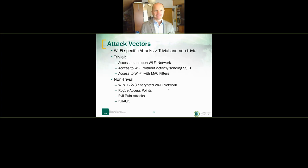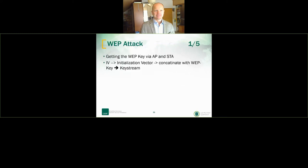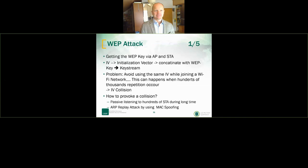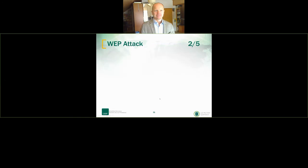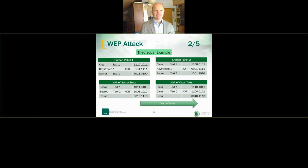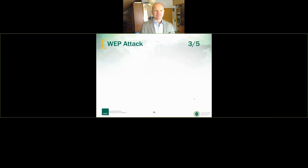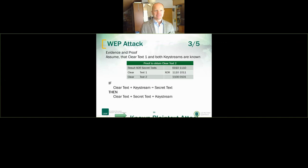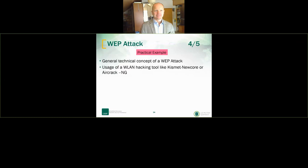Non-trivial attacks include attacking WEP/WPA/WPA2, rogue access points, and evil twin attacks using Aircrack. The key principle: if you XOR the cipher text with the clear text, you get the same results — this is known as a known-plaintext attack. Practical hacking tools like Kismet, Wireshark, or Aircrack-NG are used to find the cleartext by targeting access points and sniffing with the right equipment.